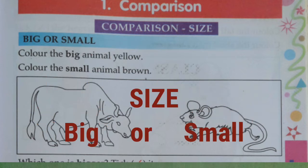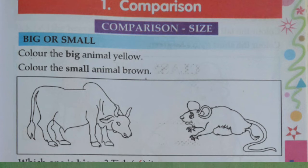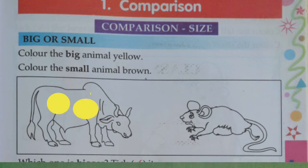First, comparison by size. That means either a thing is big or small — that is the size, big or small. See the picture. There are two pictures: one is a cow and another is a rat. You see which is the big picture. Big is cow and small is rat. So if we compare between two, cow is a big picture and rat is a small picture. Color the big animal yellow — that means color the cow yellow — and color the small animal brown, which is the rat.